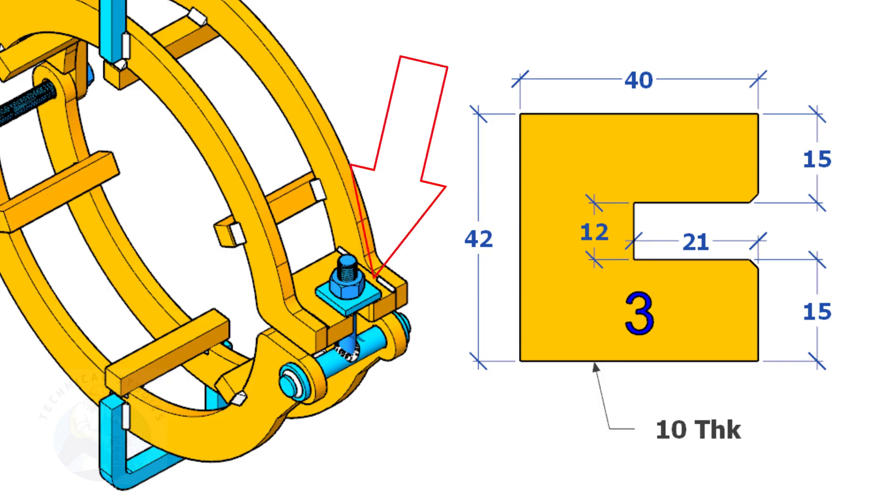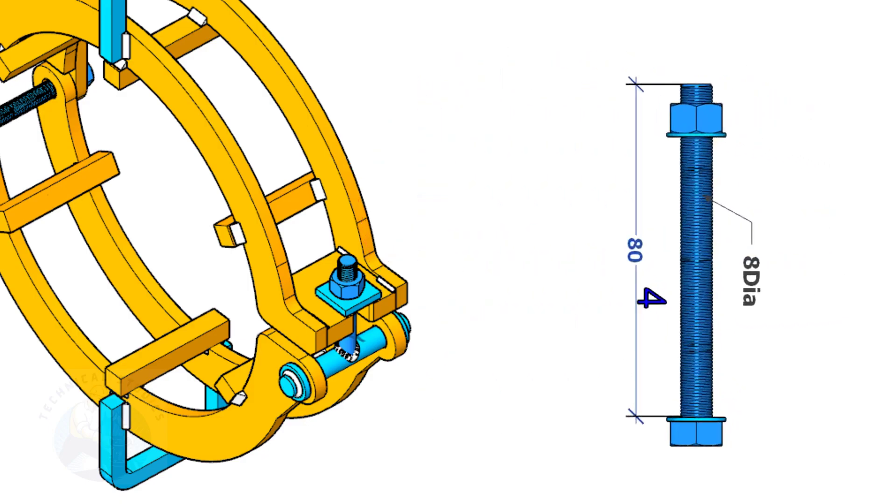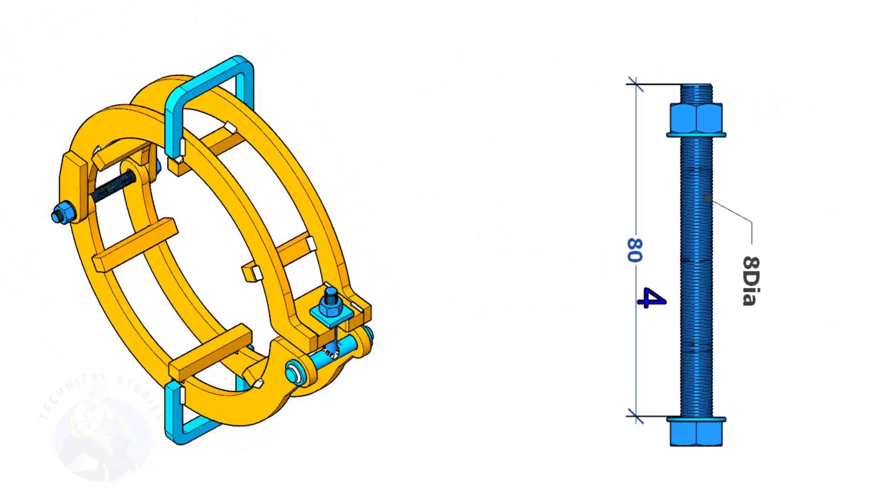Item number three sits here. Item number four is a bolt. You can use a stud bolt, or a round bar of the same size, with stoppers tack welded on both ends of the rod, after full assembly.